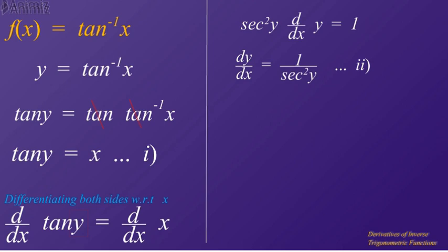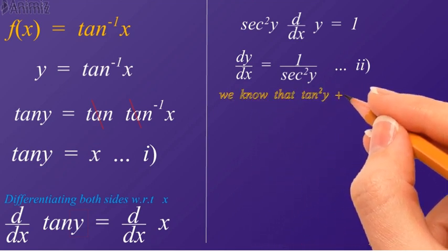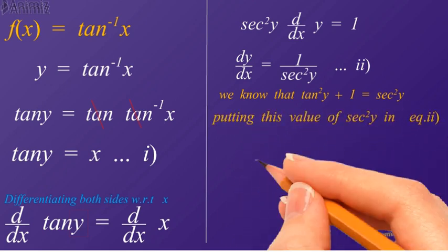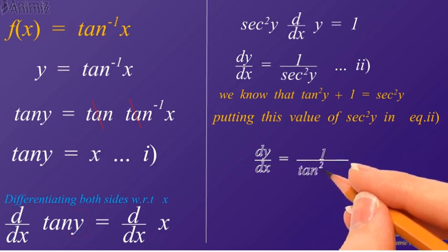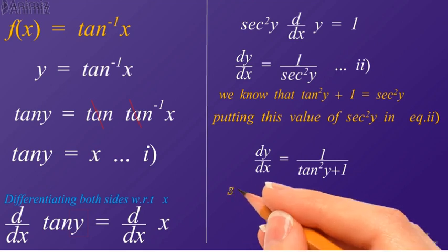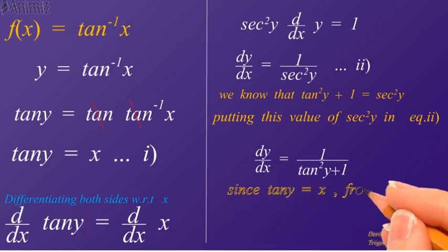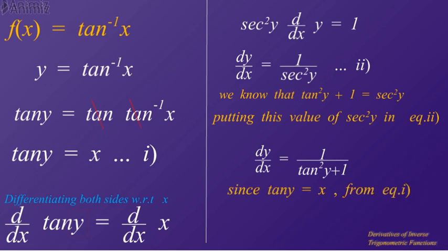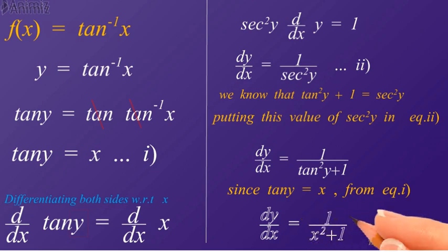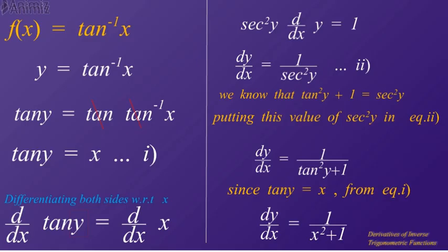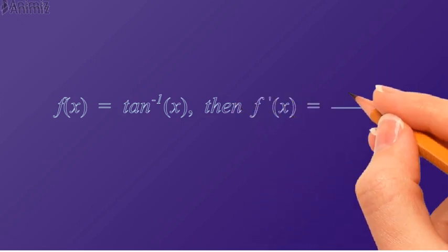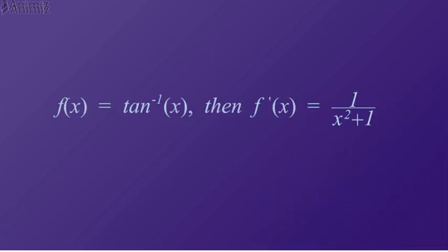We know from trigonometric identities that tangent squared y plus 1 is equal to secant squared y. Putting this value of secant squared y in equation 2, we get dy/dx is equal to 1 divided by tangent squared y plus 1. Since tangent y is equal to x from equation 1, therefore replacing tangent y by x. Hence we got the derivative of tangent inverse x, which is 1 divided by x squared plus 1. When f(x) is equal to tangent inverse x, then its derivative f′(x) will be equal to 1 divided by x squared plus 1.